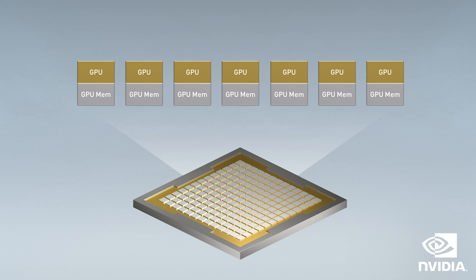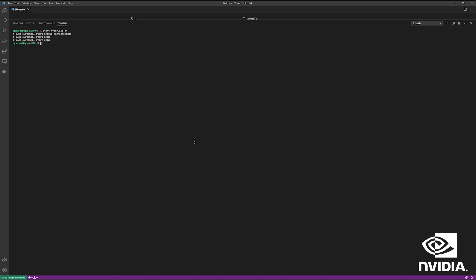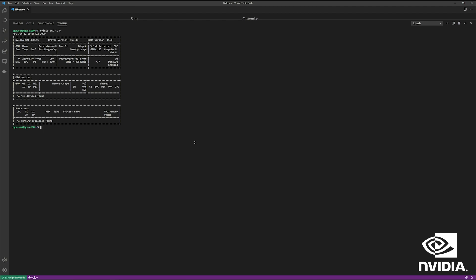For users and researchers, MIG allows them to select just the amount of GPU they need for a given job, thus extending their computational allocation budget. Let's dive in and check out MIG running a set of HPC and AI workloads on a single A100 GPU.